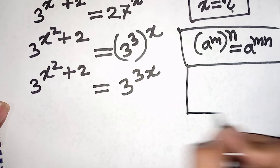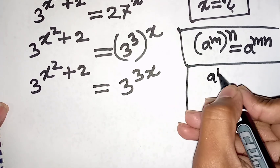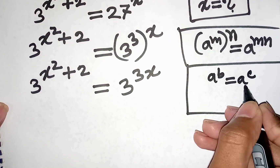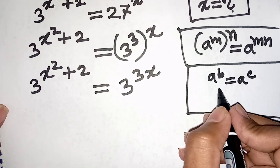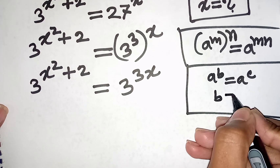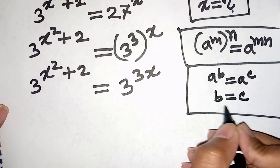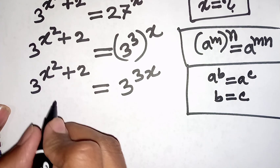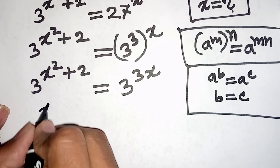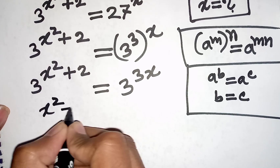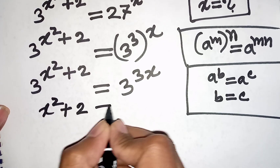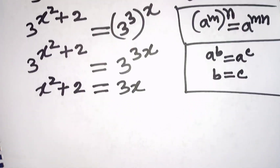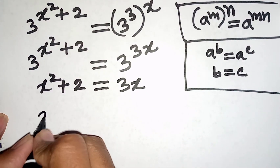According to the exponential rule: if a^b = a^c, then since the bases are the same, b equals c. So here, since both bases are 3, the bases cancel and the exponents must be equal. That means x squared plus 2 is equal to 3x.